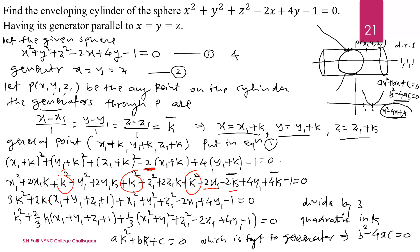Collecting terms: the k² coefficient has three k² terms, giving 3k². For the k terms, 2k is common: we get 2k(x₁ + y₁ + z₁ − 1 + 2). The constant terms free from k are: x₁² + y₁² + z₁² − 2x₁ + 4y₁ − 1. So the quadratic equation in k is: 3k² + 2k(x₁ + y₁ + z₁ − 1 + 2) + (x₁² + y₁² + z₁² − 2x₁ + 4y₁ − 1) = 0. Dividing through by 3 gives the standard form.